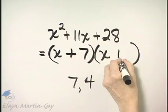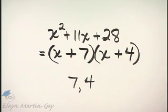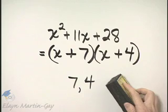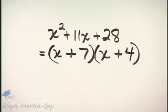And I have x plus 7 times x plus 4. It makes no difference order here. I could have written x plus 4 times x plus 7.